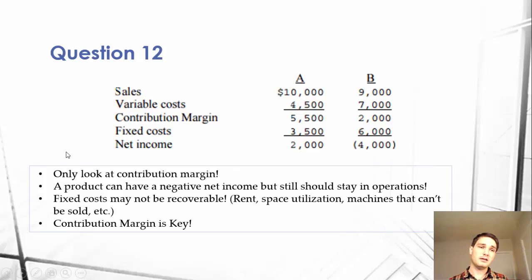If we're looking at decision making, only look at the contribution margin. That's all we have to look at here. We know that every time we sell a product B, we get $2,000 in contribution margin. If we're getting $2,000, if we cut this, we'll actually lose that $2,000.